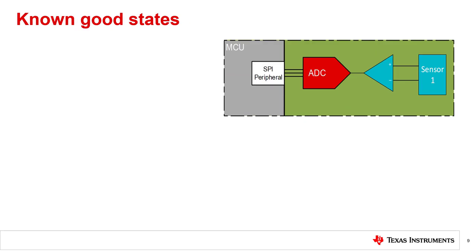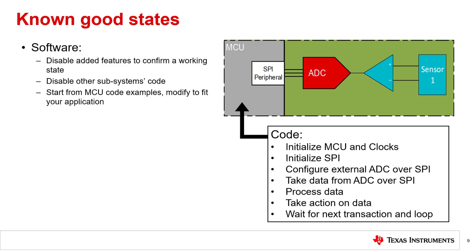The next high-level concept is to further isolate the problem by getting to a known good state. This can be done in several ways. From a software perspective, you can disable the latest features added that may have caused the issue, then check what they interact with. You can also disable routines that don't pertain to the subsystem you are currently looking at. This can eliminate potential interference or misleading debug paths.